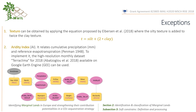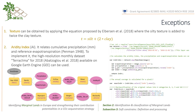The second exception is the aridity index, which relates cumulative precipitation and reference evapotranspiration. For this, we used the high-resolution climate dataset for 2018 available on Google Earth Engine. In the figure on the right, you have the Google Earth Engine code to perform the aridity index calculation for the year 2018.